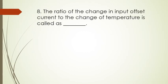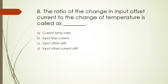The ratio of the change in input offset current to the change of temperature is called—whenever we talk about changes in op-amp quantities with respect to temperature, that is called thermal drift. Here we're discussing the change in input offset current, so it's called input offset current drift.